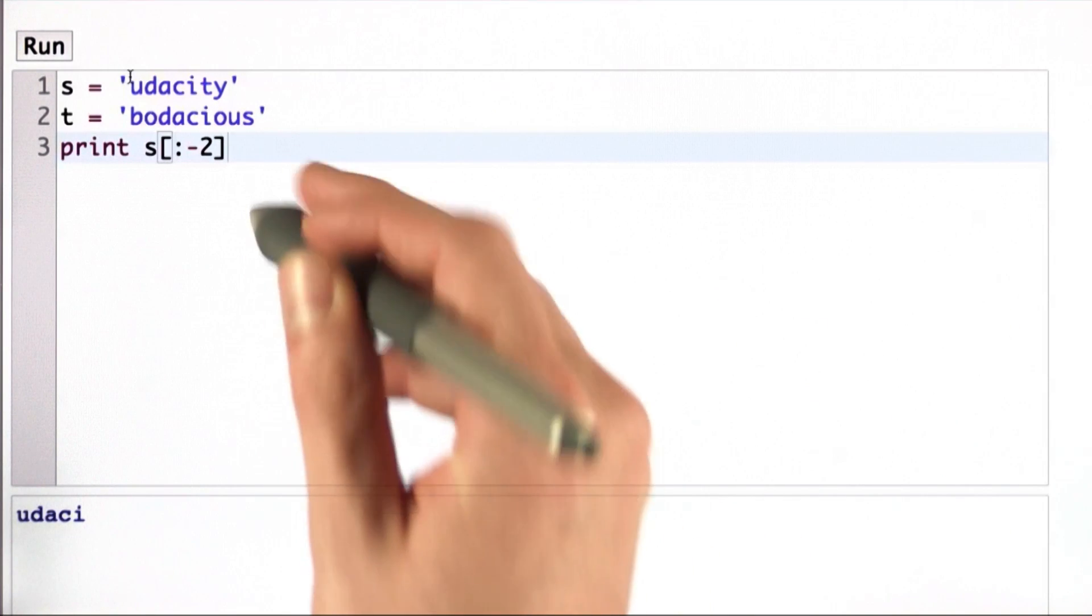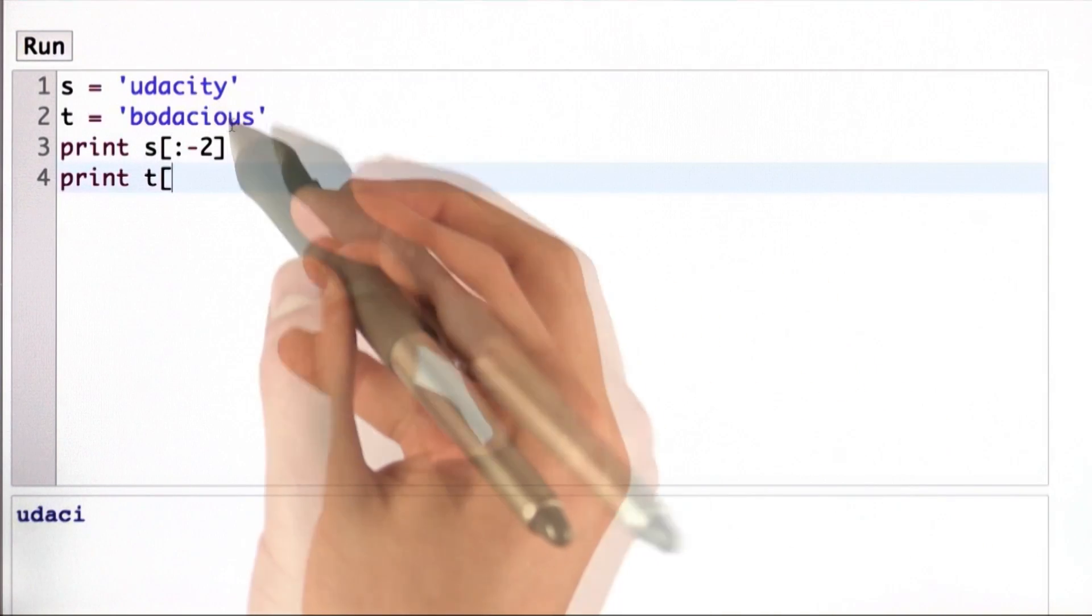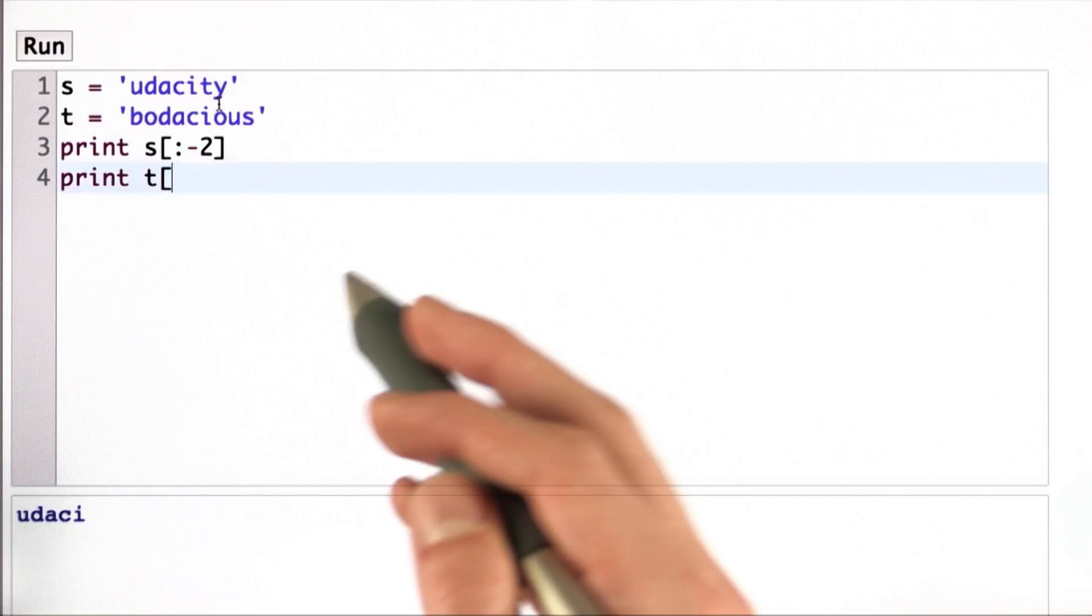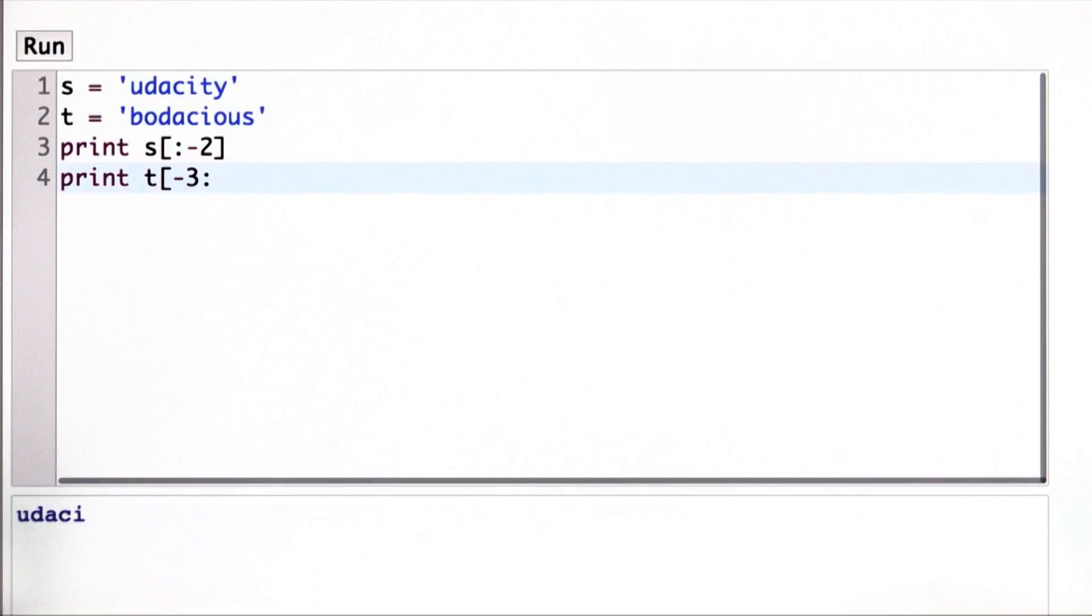Let's do the same thing with t. Here we have a little different problem. We want to start with the last three characters. We're going to use the same negative notation and go all the way to the end.